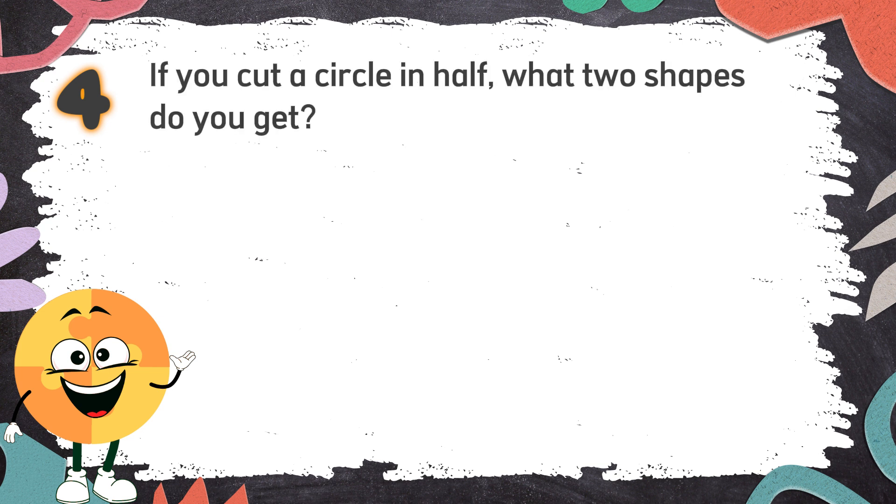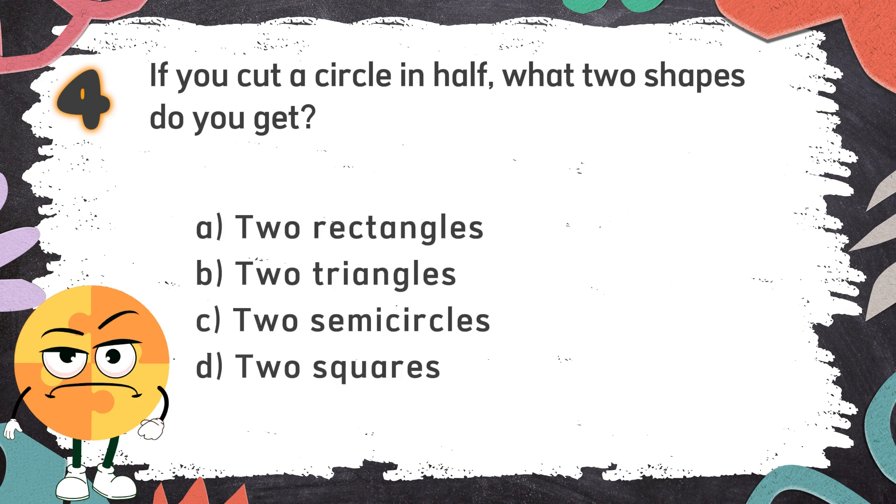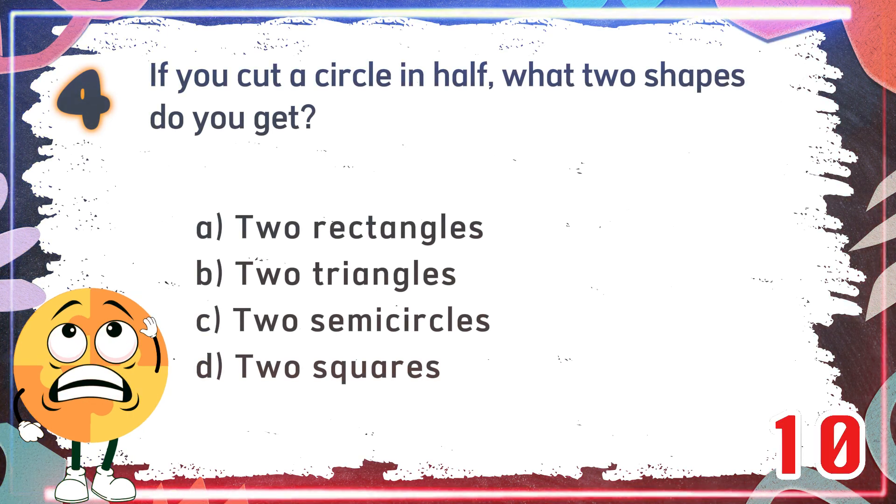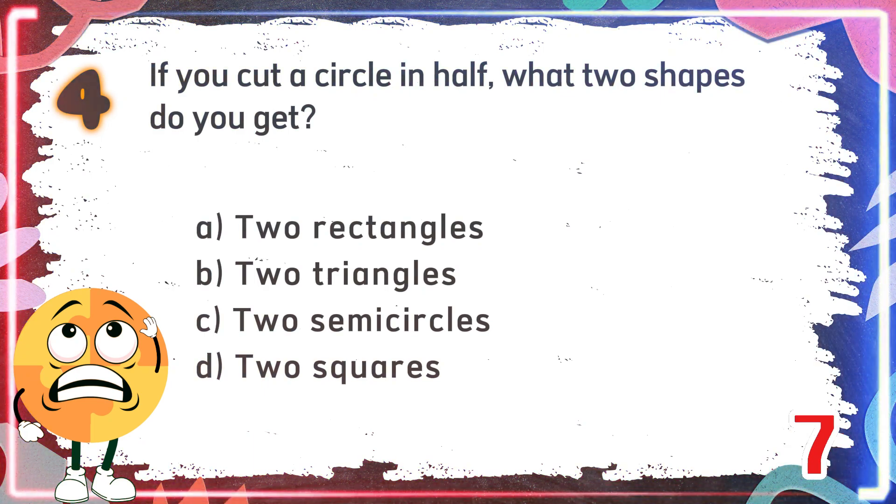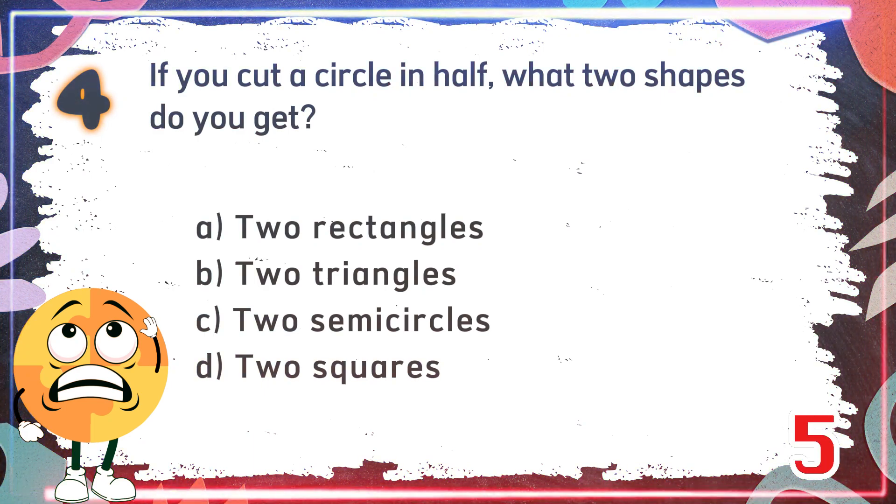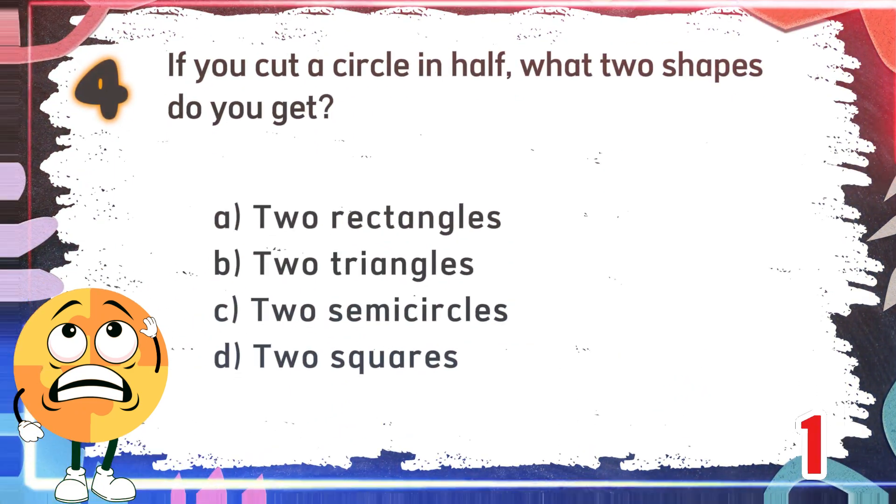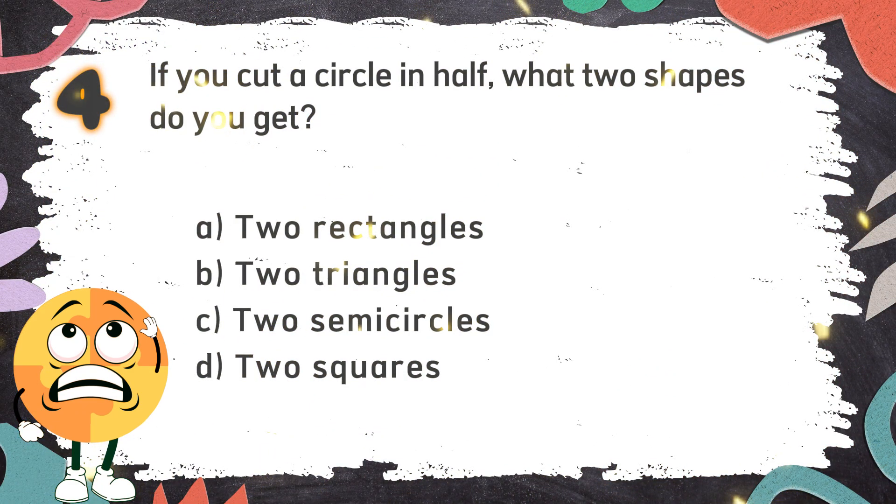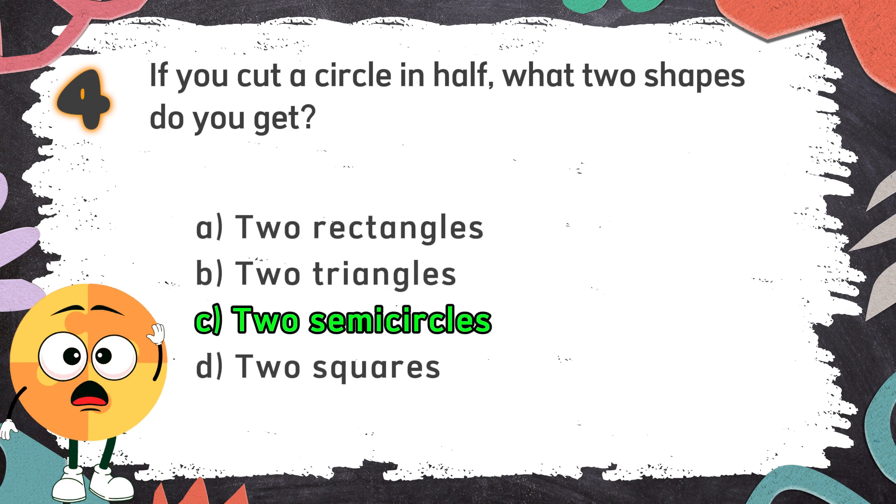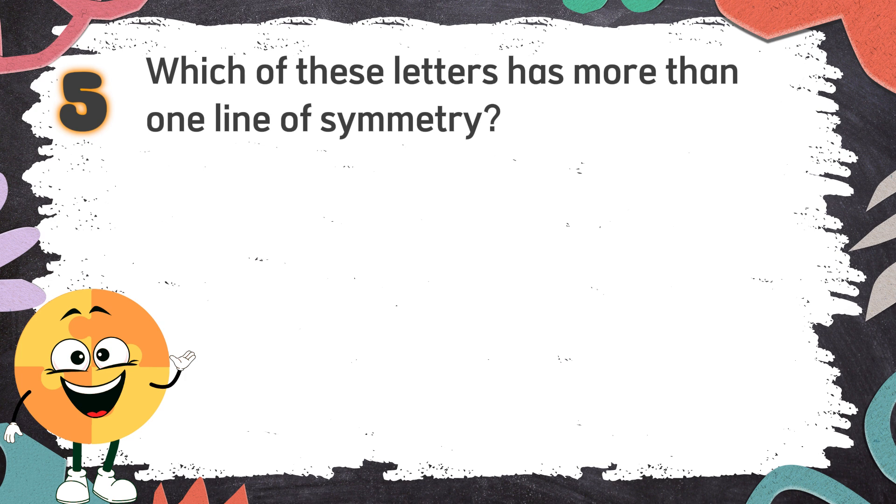The correct answer is C. Rhombus. Number 4: If you cut a circle in half, what two shapes do you get? The choices are A. Two rectangles, B. Two triangles, C. Two semicircles, D. Two squares.